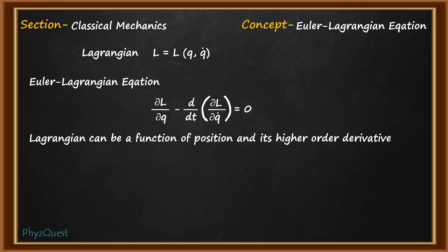Why? Because when Lagrangian is a function of higher order derivative of position the resulting system becomes unstable and that instability is called Ostrogratzky instability.